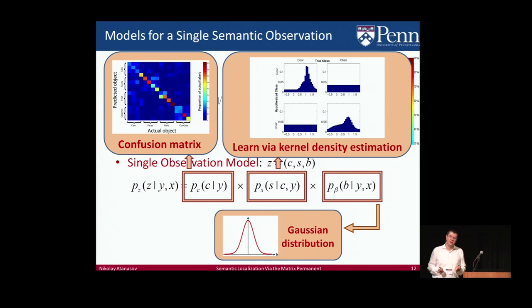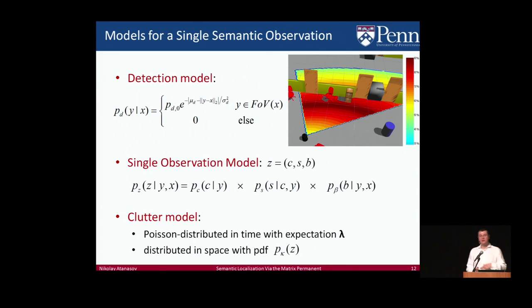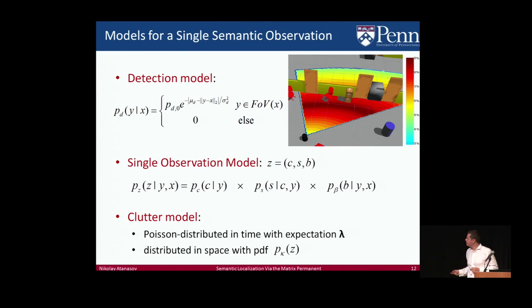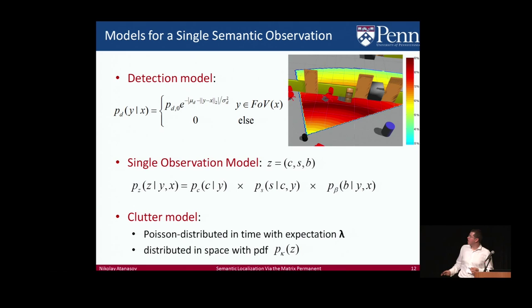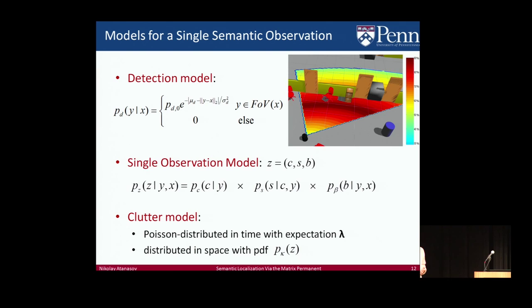We also need a probability that a measurement was generated by clutter — an object not on the map, a false detection. For this we use a Poisson distribution in time with expectation lambda, meaning that at each image we expect on average lambda clutter detections. The spatial distribution is modeled with a PDF p_k, which can be learned from data, though experiments show a uniform distribution is sufficient since clutter measurements can have any values.